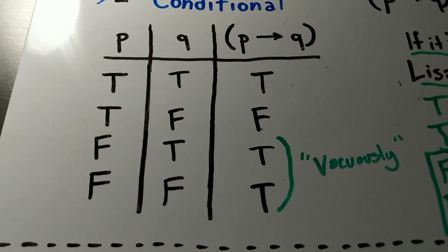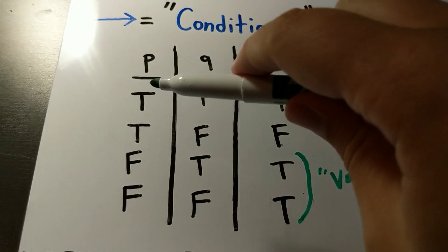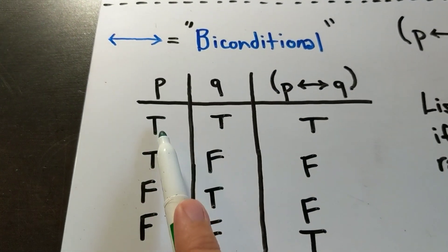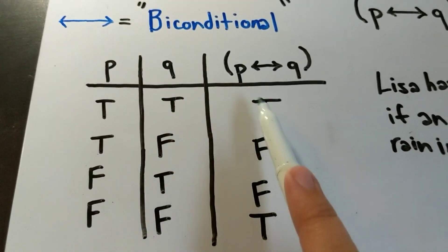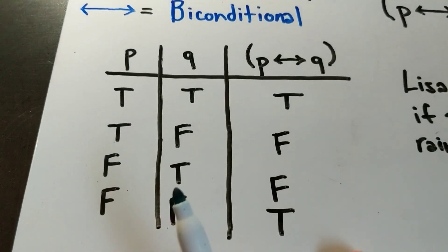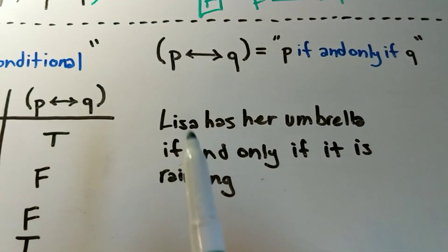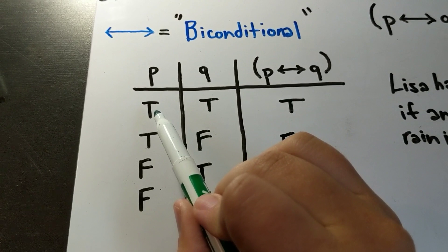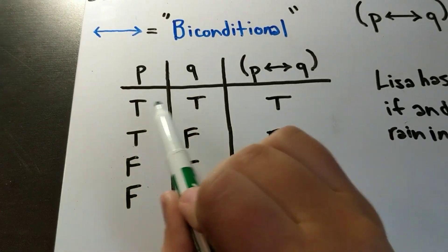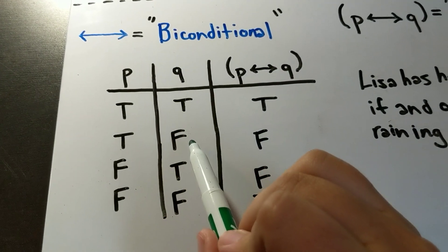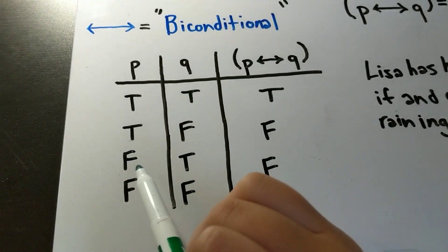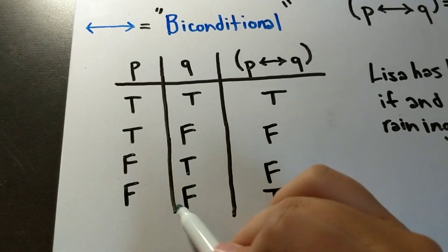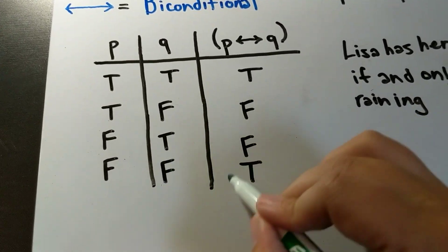Going back to the table for the conditional, you only get the biconditional to be true if both P and Q are true, or both P and Q are false. For example, 'Lisa has her umbrella if and only if it is raining' means: if it is raining and Lisa has her umbrella, the statement is true; if it is raining and Lisa does not have her umbrella, the statement is false; if it is not raining and Lisa has her umbrella, it's false; and if it is not raining and Lisa does not have her umbrella, the statement is true.